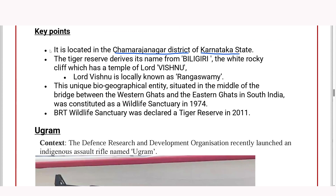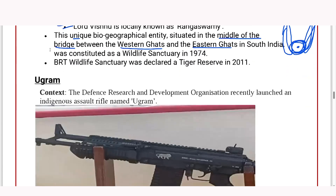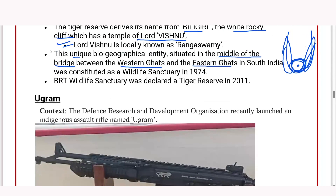The Tiger Reserve derives its name from the white rocky cliff which has a temple of Lord Vishnu. This is a unique biogeographic entity situated in the middle of the bridge between the Western Ghats and Eastern Ghats — it is a midpoint between these two major ranges.